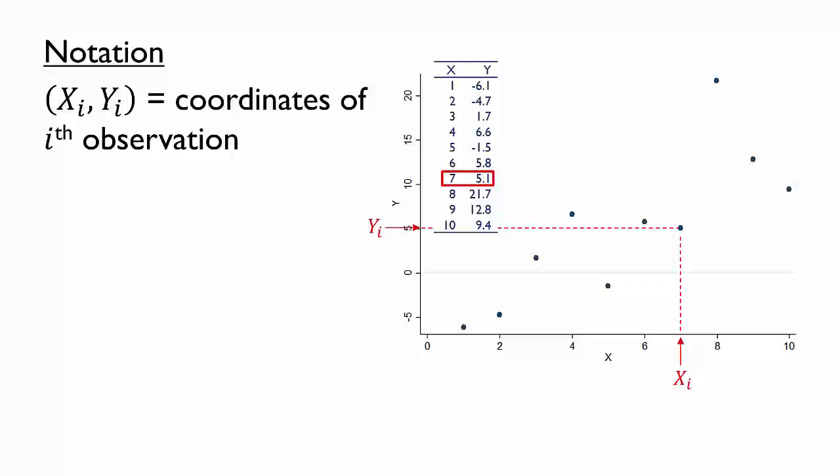This ordering may be arbitrary in many data sets. Note that we could shuffle the rows of the data set and still have the same points plotted on the graph.